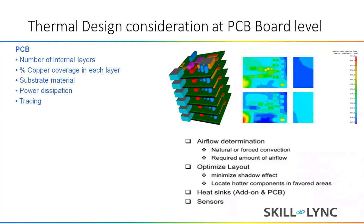At the PCB level, we must consider the number of layers, the percentage of copper coverage in each layer, the substrate material, power dissipation, and trace routing — all of which impact the thermal performance of the PCB board. Natural versus forced convection also makes a significant difference at the PCB or system level. We also add heat sinks to dissipate more heat and lower the junction temperature of components. The PCB mounting method matters too — mechanical wedge locks have higher thermal conductivity and allow more heat to be conducted from the PCB to the outer chassis.